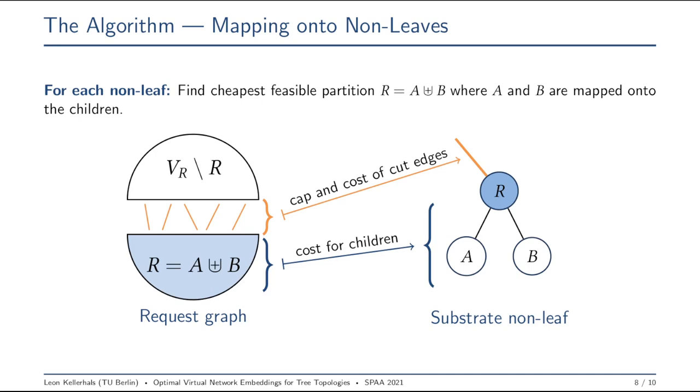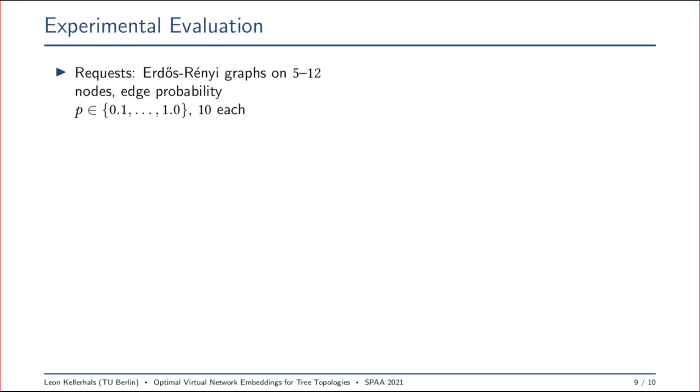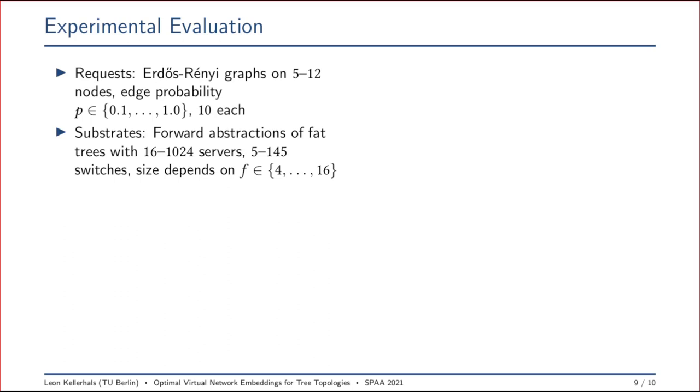Lastly, I'd like to briefly present our small experimental evaluation. Here we check the performance of our algorithm on some synthetic input. For our requests, we used Erdos-Renyi graphs on 5 to 12 nodes and with an edge probability between 10% and 100%. For our substrates, we use forward abstractions of fat trees with 16 up to 1024 servers and up to 145 switches.